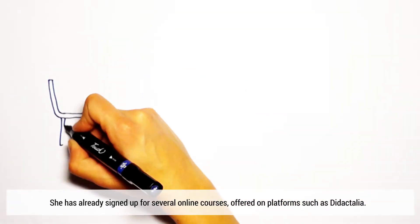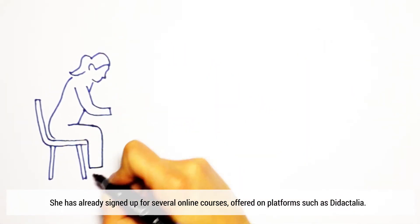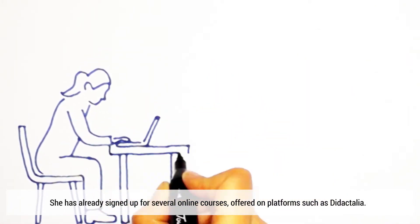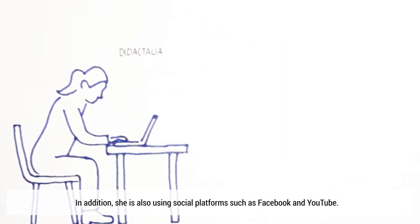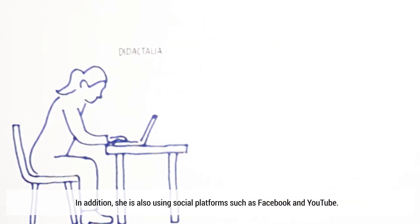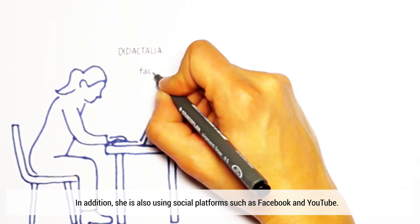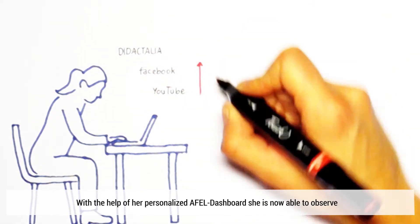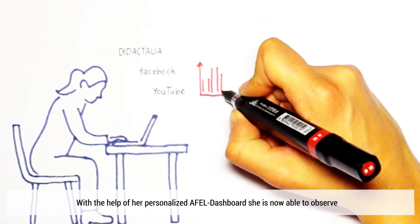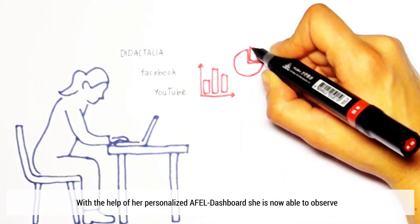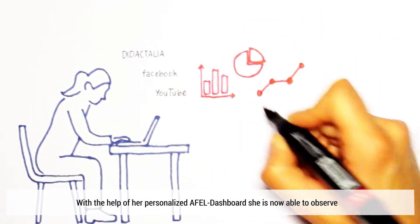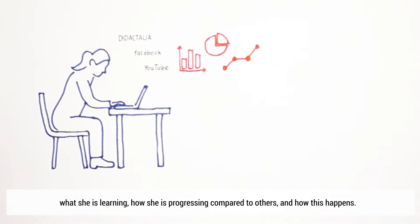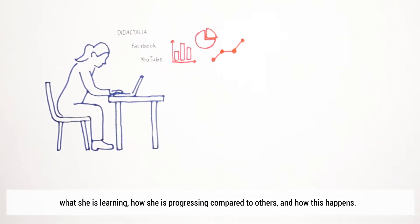She has already signed up for several online courses offered on platforms such as Didactalia. In addition, she is also using social platforms such as Facebook and YouTube. With the help of her personalized AFL dashboard, she is now able to observe what she is learning, how she is progressing compared to others, and how this happens.